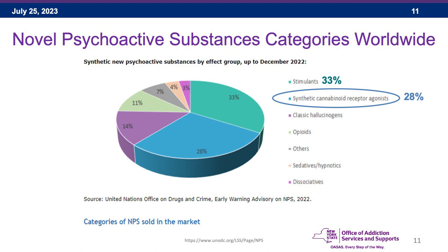From the UNODC, looking at categories of NPSs sold on the market by effect group up to December 2022: worldwide, the top substance reported were synthetic stimulants at 33%, followed by synthetic cannabinoid receptor agonists at 28%, followed by hallucinogens, opioids, other sedatives, and then dissociatives. So worldwide, stimulants are number one and synthetic cannabinoids are number two.